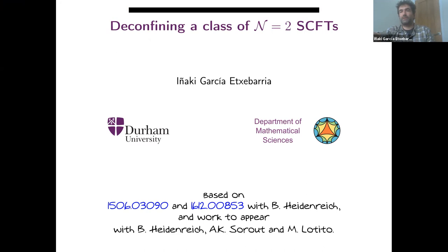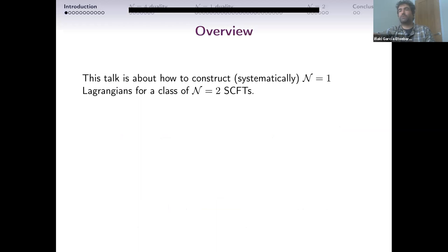I wanted to talk about some work that should appear soon with Ben Heidenbreich, Ajitsurut, and Matteo Lotito. The working title is 'Confining a Class of N=2 Superconformal Free Theories,' but it's really about how to construct N=1 Lagrangians for a class of N=2 superconformal free theories. Specifically, I want to construct some non-conformal N=1 theories that flow in the IR to some superconformal free theory with enhanced supersymmetry.